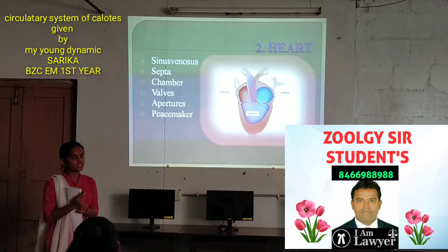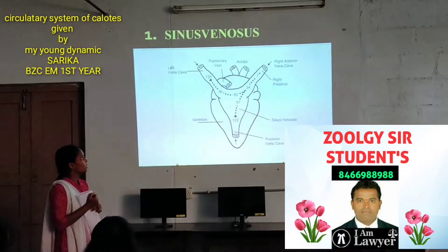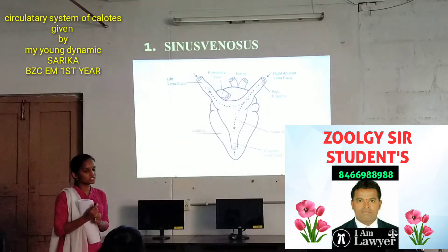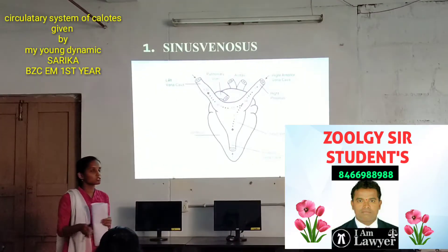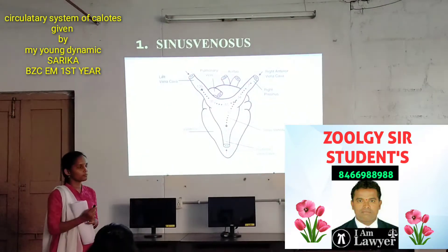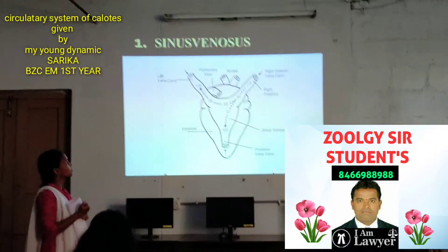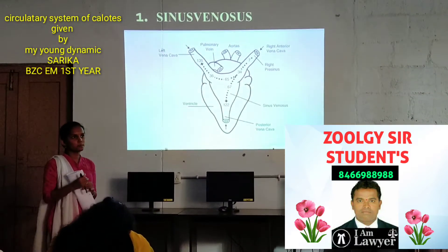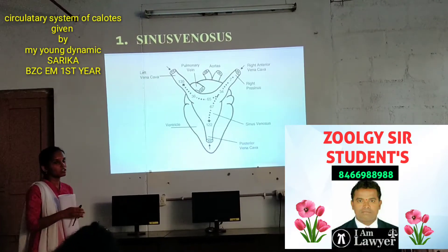The sinus venosus is triangular in shape and it collects the deoxygenated blood from throughout the body and sends it to the right auricle. The deoxygenated blood is carried from throughout the body via mirror covers.